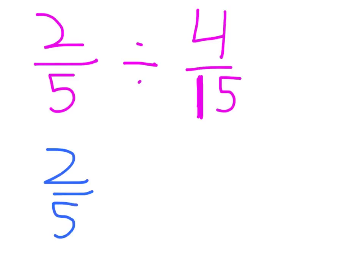So, if we're dividing two-fifths by four-fifteenths, we know that's the same as multiplying two-fifths by the reciprocal of four-fifteenths, which is fifteen-fourths.